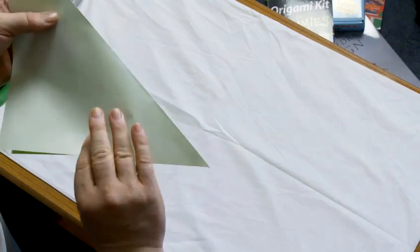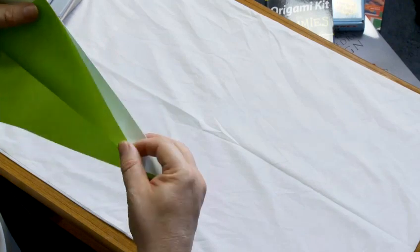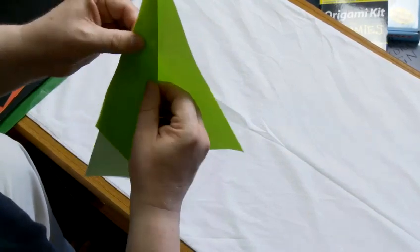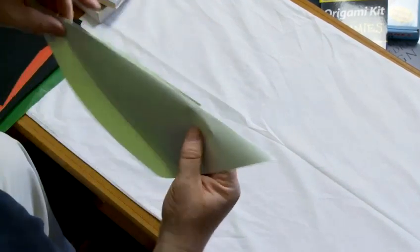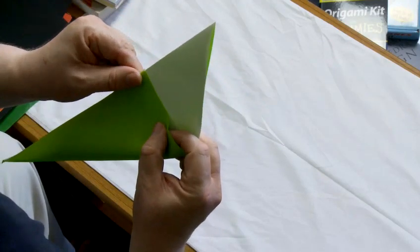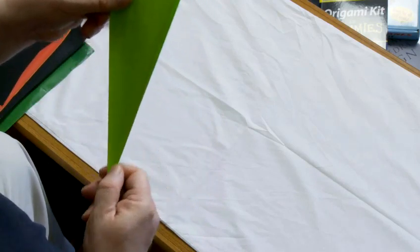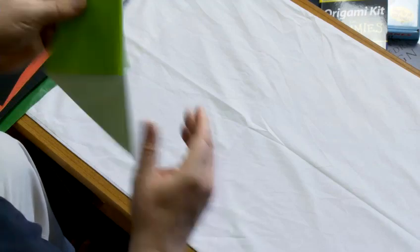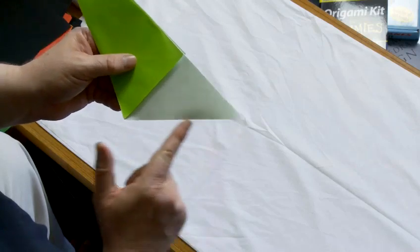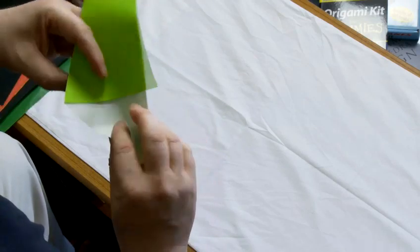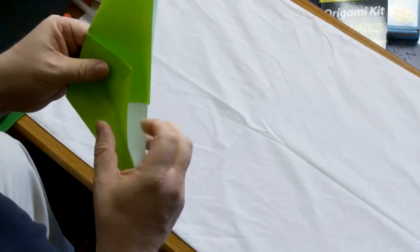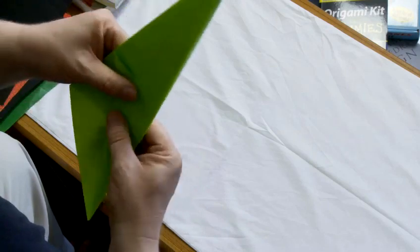What we're going to do is fold this raw edge at the bottom up to the center. Do the same on the other side. Then we've got a little white triangle and a big green triangle. We fold the raw edge of the little green triangle up to the center as well. Trying to avoid the paper slipping while we do that. So that's good enough.